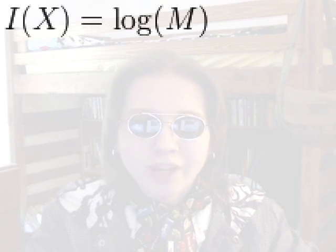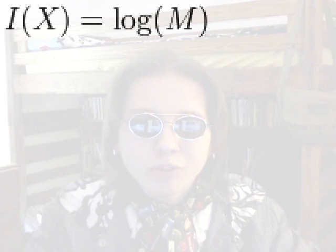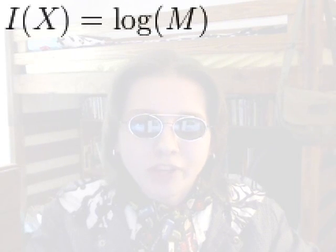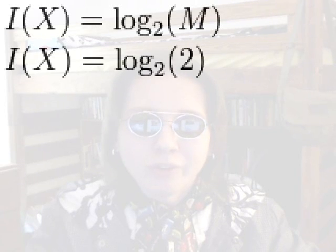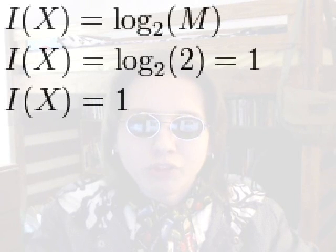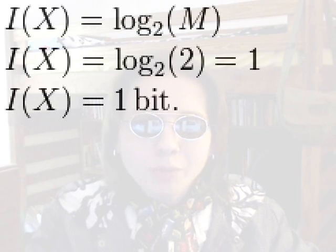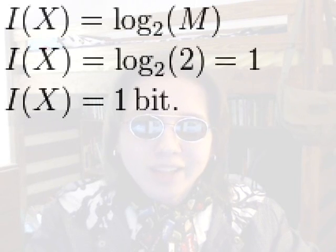The unit we use to measure I of X depends on the base of the logarithm. We're going to measure I of X in bits. A bit is a binary digit, meaning it has two possible states, so the base of the logarithm will be 2. Since M represents two possible outcomes, I of X equals log base 2 of 2, which equals 1. So the information we receive from information source X equals 1 bit. When we flip a fair coin with two possible outcomes, we have 1 bit of uncertainty, and when it lands, we lose that uncertainty and gain 1 bit of information.